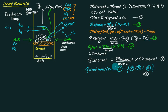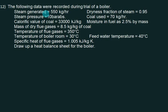Given data for the numerical problem: mass of steam generated is 550 kg, dryness fraction is 0.95, steam pressure is 10 bar, coal used is 70 kg, calorific value of coal is 33,000 kJ/kg, moisture content is 2.5%, mass of dry flue gas is 8.5 kg per kg of coal, flue gas temperature is 350°C, boiler room temperature is 30°C, feed water temperature is 40°C, and specific heat of dry gas is 1.005 kJ/kg·K.